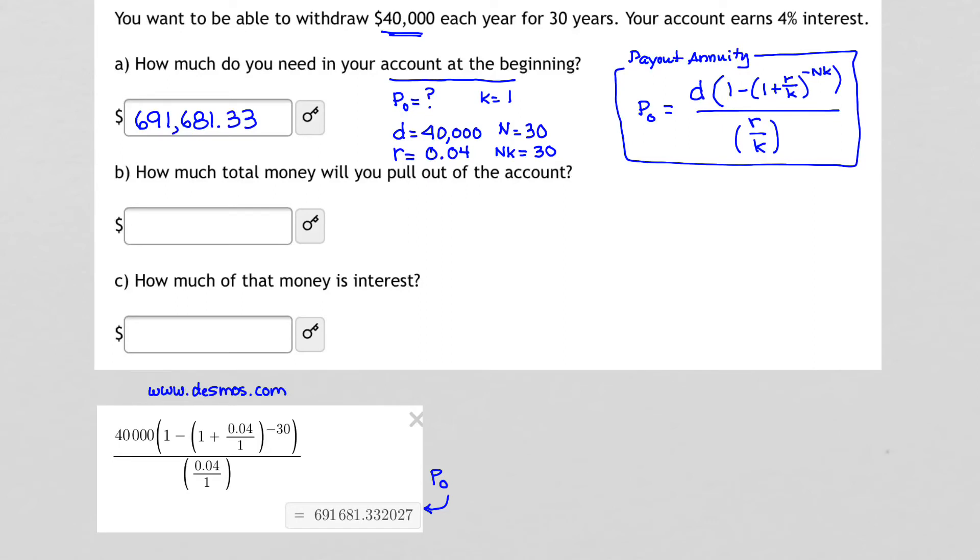Part two, how much money will you pull out of the account? This is pretty simple. Every year, I'm going to be taking out $40,000 and I'm going to do that over the course of 30 years.